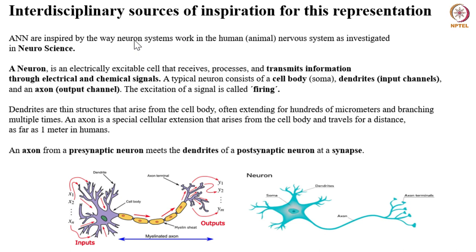One very important point is that in animal or human systems, neurons are not homogeneous — there are many different kinds of neurons in the body, tailored to specific purposes. But if you abstract, you can say that more or less they work in the way just described.